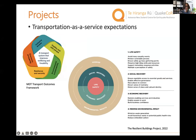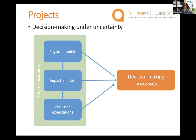We have the slides back. So on transport as a service expectations — understanding what end users actually need — what you can see is a sneak preview of results from the resilient buildings project, looking at what people want and expect from their assets after an event. If we understand those, we can link that to our models and feed into decision making processes. The final aspect pulls physical models, impact models, and end user expectations together accounting for uncertainty, feeding into investment decisions around resilience.